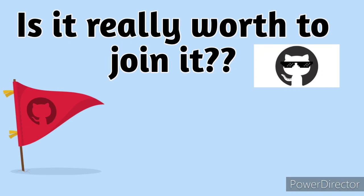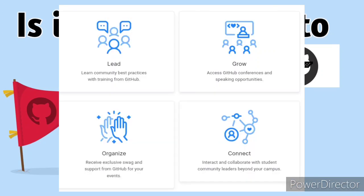The program works on four stages: Lead, Organize, Grow, and Connect. Lead means learning community best practices with training from GitHub. Organize means receiving exclusive swags and goodies from GitHub for your events. Grow means accessing GitHub conferences and speaking opportunities. And Connect means interacting and collaborating with student community leaders beyond your campus, which will leverage your technical, public speaking, and many other skills.